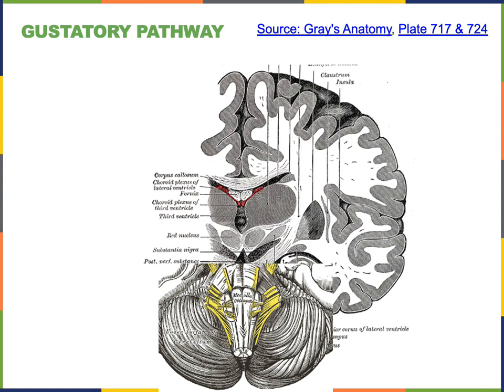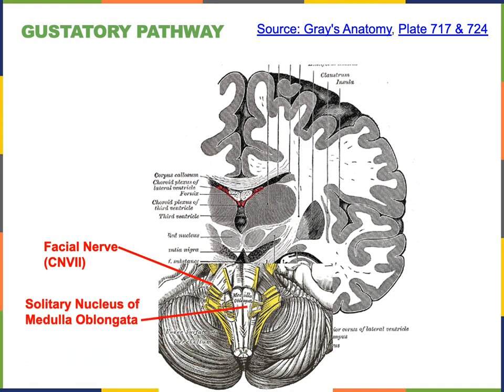The sensory pathway for the gustatory modality begins with gustatory receptor cells releasing neurotransmitter to stimulate the dendrites of afferent neurons. These afferent neurons relay information through axons that travel into the cranium in the facial nerve, cranial nerve number seven. The axons of the afferent neurons will form synapses with neurons in the medulla oblongata in a region known as the solitary nucleus of the medulla oblongata.